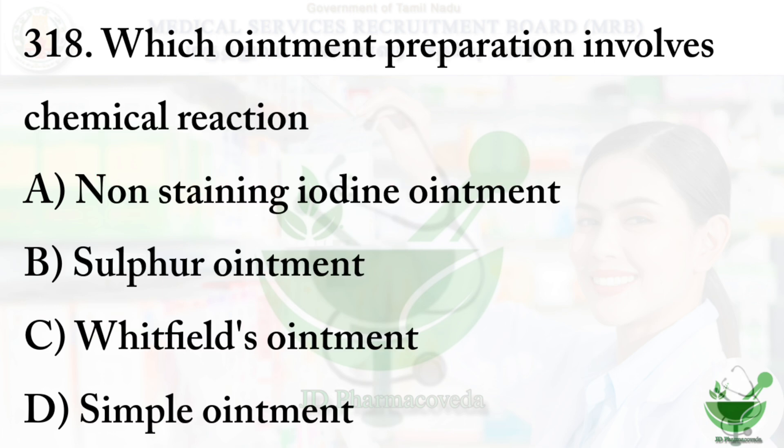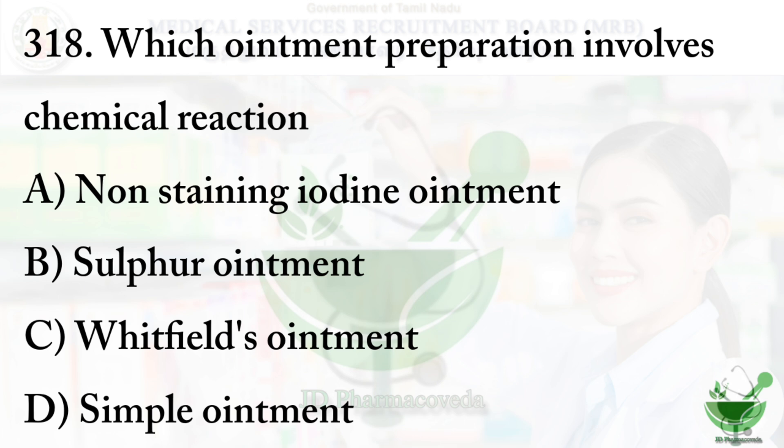Question number 318: Which ointment preparation involves a chemical reaction? Option A: non-staining iodine ointment, Option B: sulfur ointment, Option C: Whitfield ointment, Option D: simple ointment. The correct answer is Option A, non-staining iodine ointment.